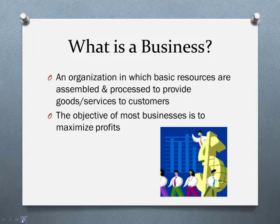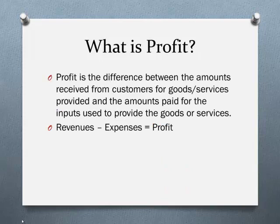We're going to take basic resources, assemble or process them to provide goods or services. The objective is to maximize profits — not just make a profit, but make the most that you can. Profit is revenues minus expenses — a very simple calculation, but we're going to turn it into a lot more difficult work. We'll do an income statement. Starting out it's going to be very simple, but by the time we get through Accounting 2, you'll see the income statement can be very complicated. Profit is the difference — it's what's left over.